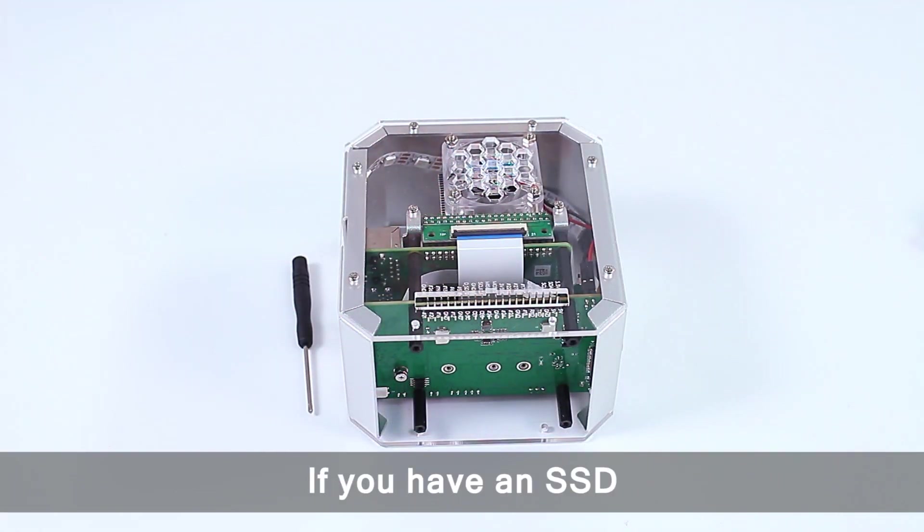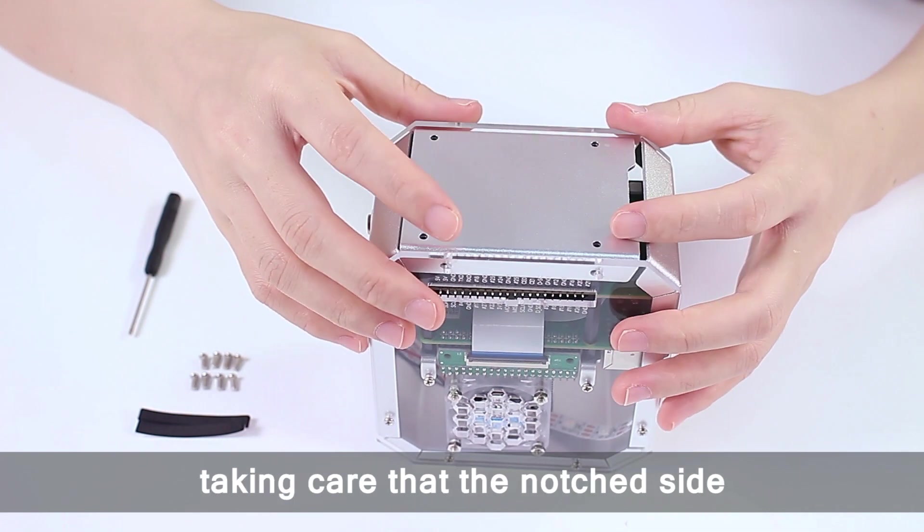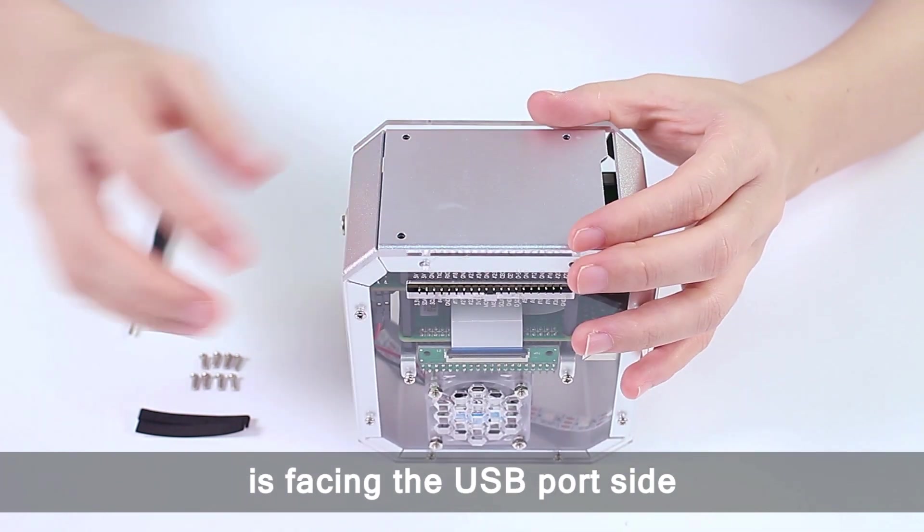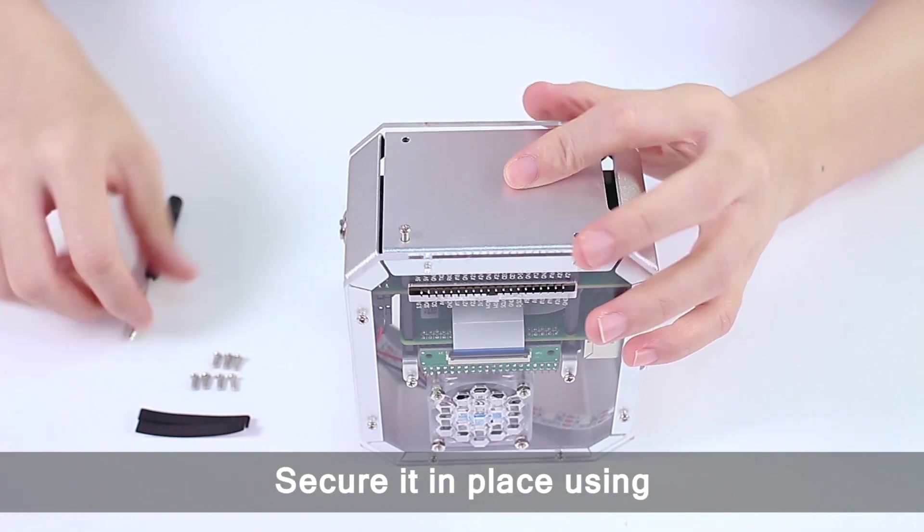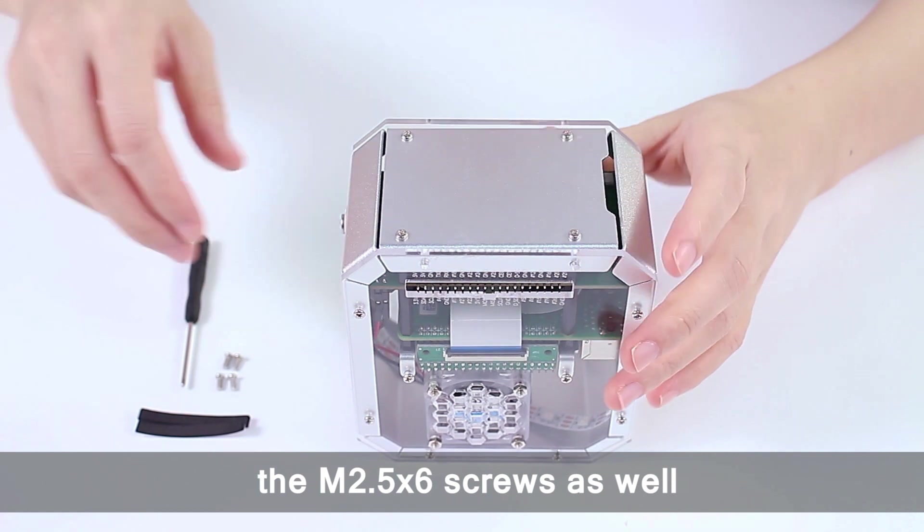If you have an SSD, you can refer to the later video for guidance on installing it. Now put the bottom plate on, taking care that the notched side is facing the USB port side. Secure it in place using the M2.5 by 6 screws as well.